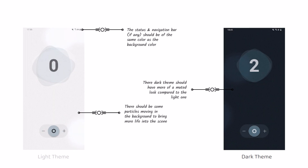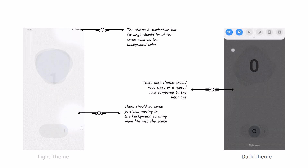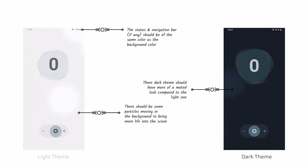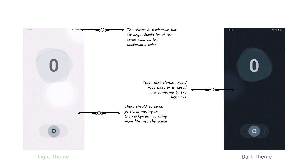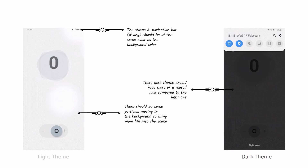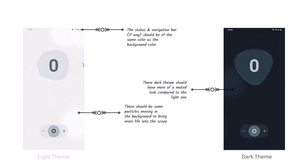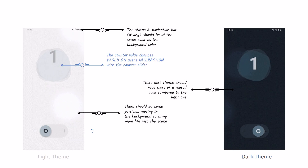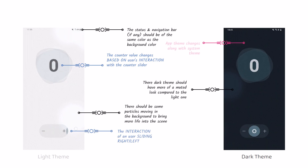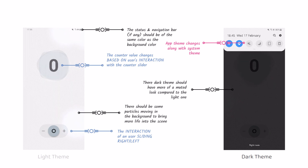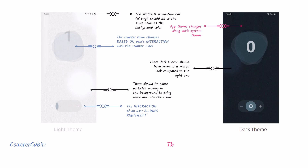Now that we have roughly established how the design will look, it's time to think about how we are going to implement the functionality of the app. What I frequently do at this step is think about what are the main features my app will benefit from — mainly, what parts of the application will dynamically change as a response to an interaction. In our case, we have two parts meeting this condition: the counter value changes whenever the user slides right or left, and the theme of the app changes accordingly to the system theme picked by the user.